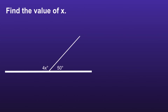Find the value of x. Since we know that these two angles are equal to 180 degrees because they form a straight line, we can write an equation to help us find the value of x. This equation would be 4x plus 50 is equal to 180. Now we have a two-step equation again.